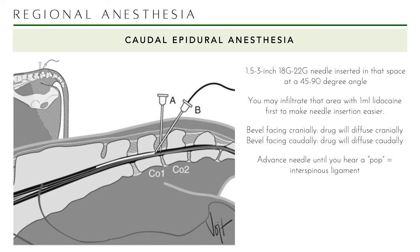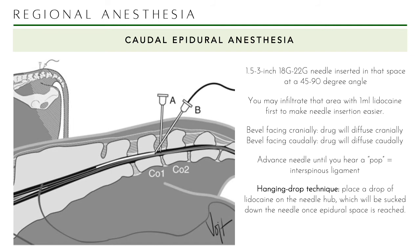How do you know you're in the epidural space? You will feel — and sometimes hear — resistance as you pass through the interspinous ligament (ligamentum flavum), and once you penetrate it, the resistance disappears. Another method is the hanging drop technique: place a drop of lidocaine on the needle hub and insert further until you reach the epidural space — at that point, the drop of lidocaine will be sucked down into the needle. Once you're there, keep the needle at that angle and inject the local anesthetic.